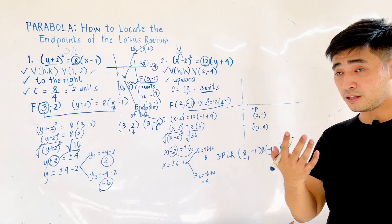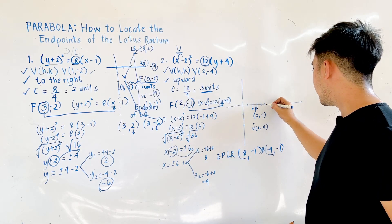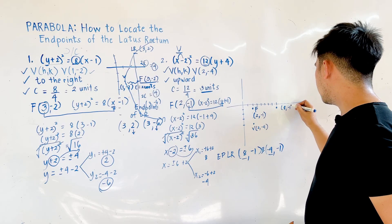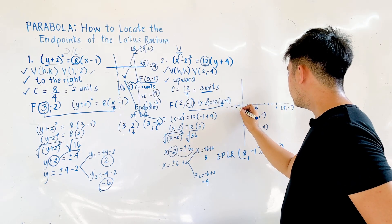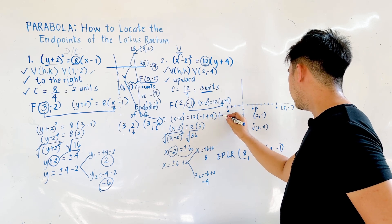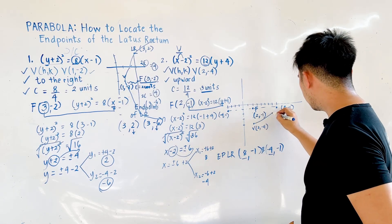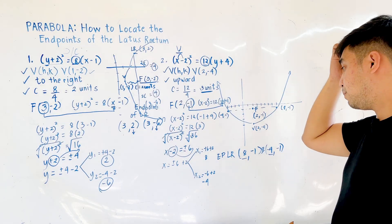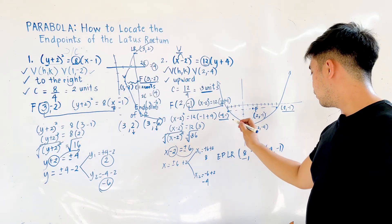The endpoints of the latus rectum are at (8, -1) and (-4, -1). Plotting these points: (8, -1) is one endpoint and (-4, -1) is the other. The parabola opens upward, and these are the endpoints of the latus rectum.